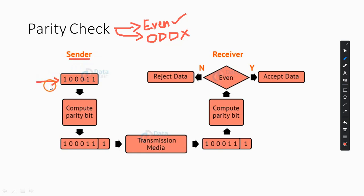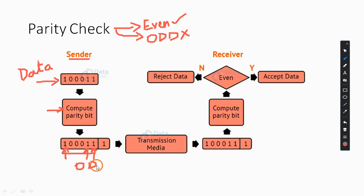On the sender side, take the data that the sender wants to send to the receiver and compute the parity bit. The number of ones in this data is three, which is odd. According to even parity the number of ones should be even, so we add a parity bit of one. Now the number of ones is four, which is even. This entire data along with the parity bit goes through the transmission channel to the receiver.